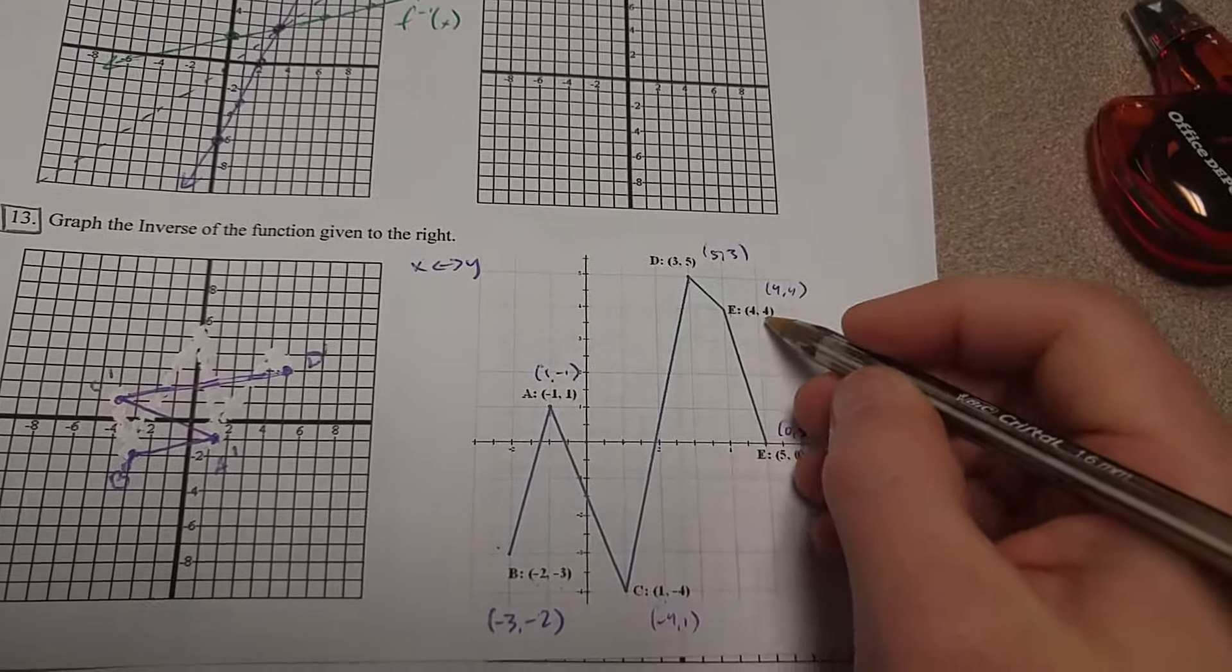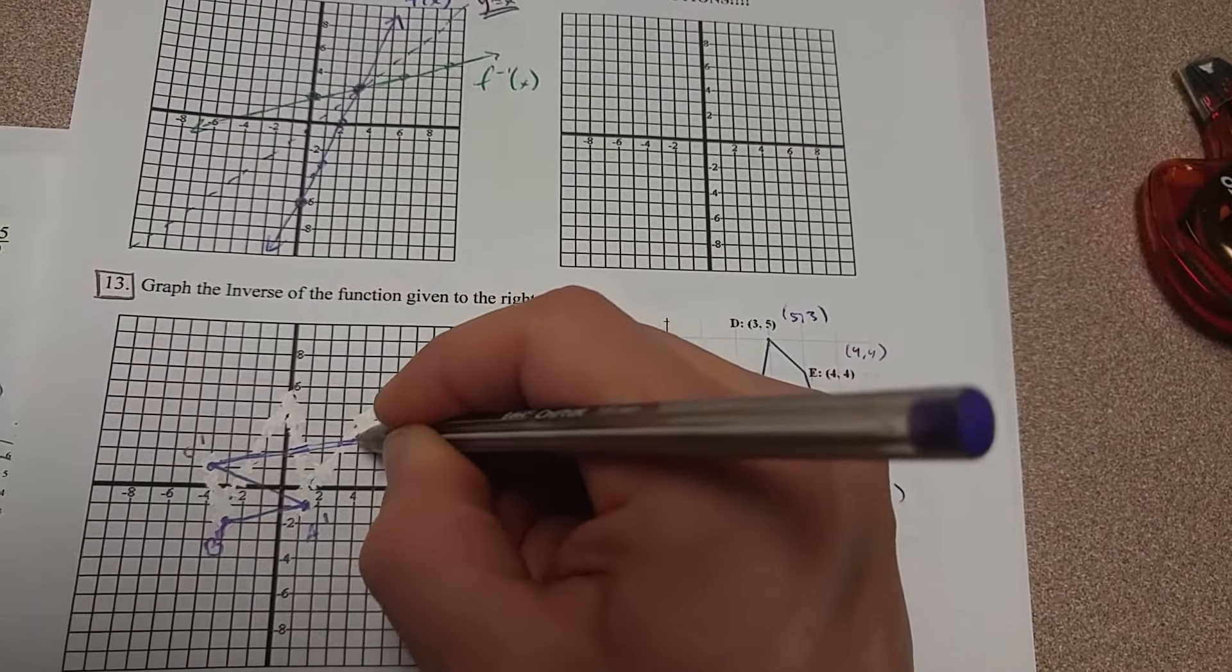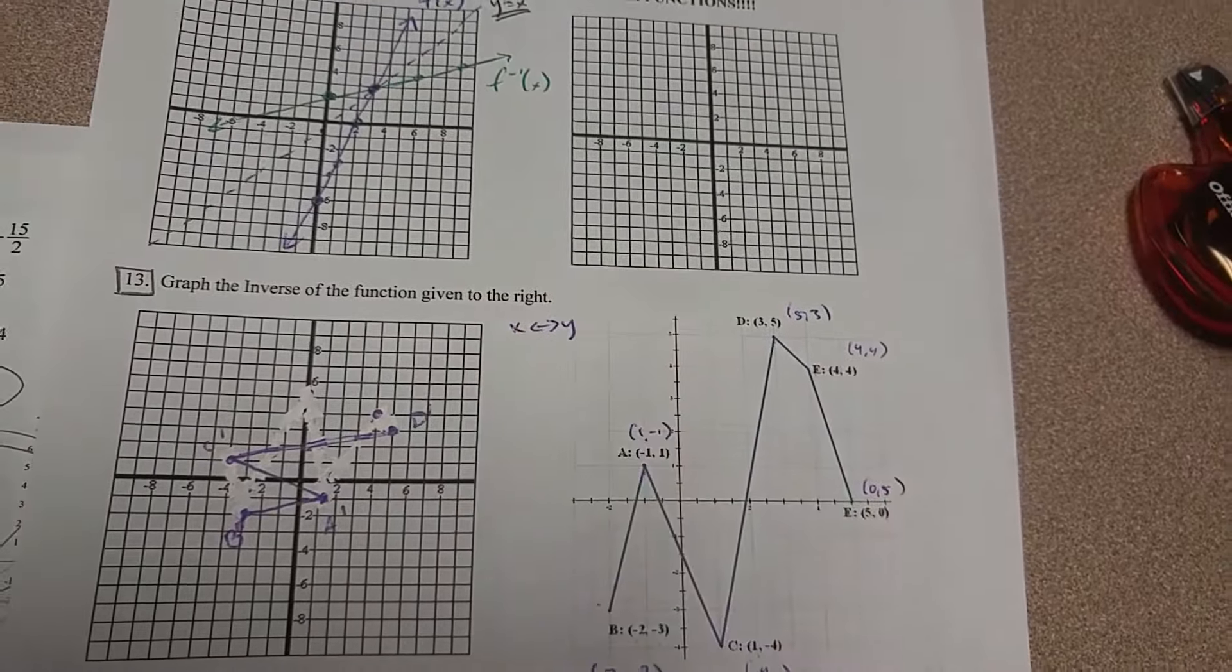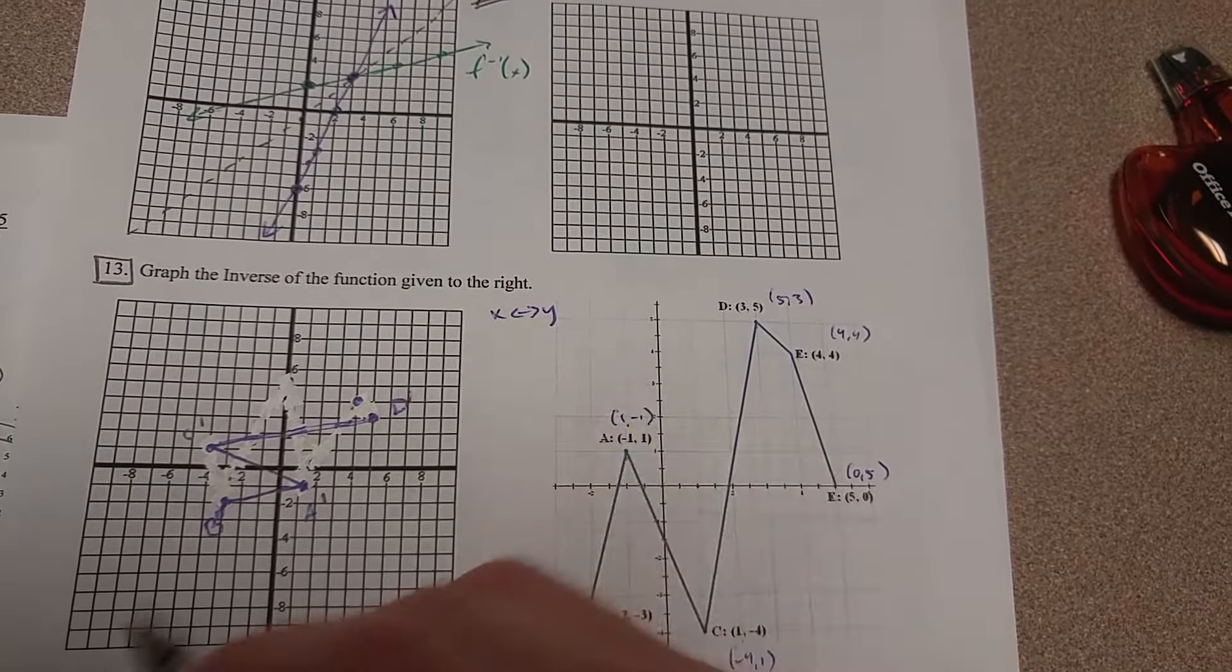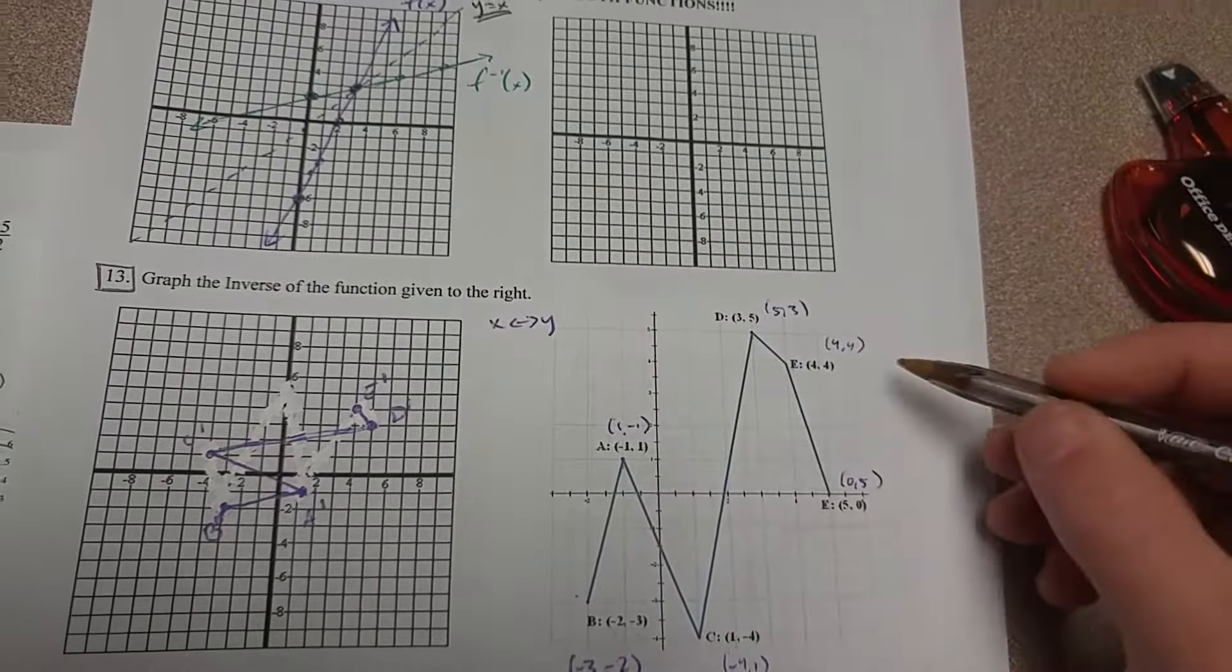E prime is still going to be 4, 4. If you switch 4, 4, it doesn't go anywhere. And 4, 4 is still on that line y equals x that we'd be reflecting over. So this is going to be E prime, and it connects with D prime.